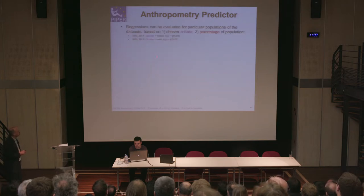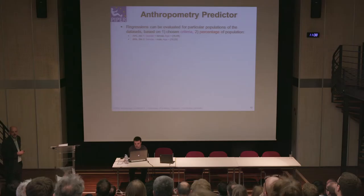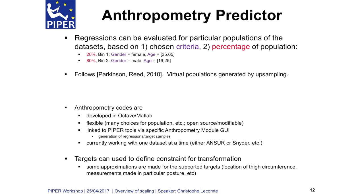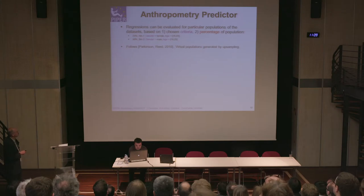In practice, the regressions are evaluated for a particular population — for example, only female or male, or only children between 12 and 14 years old. To generate a population, you choose criteria such as height, age, or gender, and define different groups. For example, you could have 20% female in a given range and 80% male in your population to generate the regression.